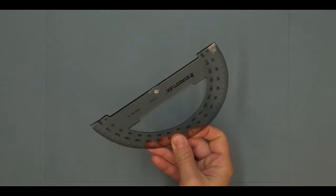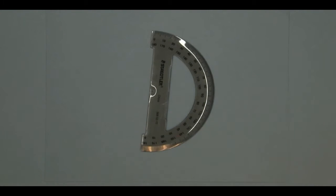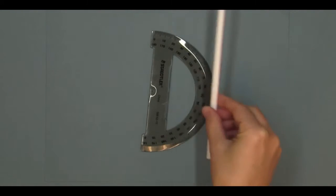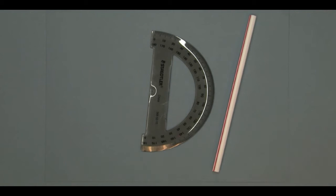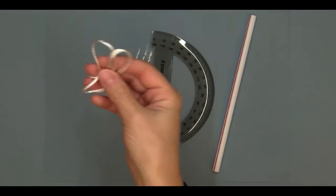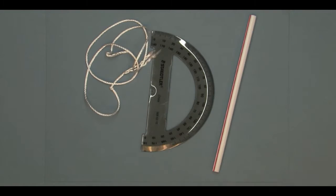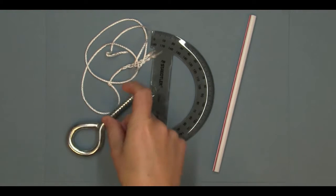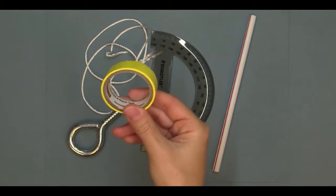We're going to show you how to make your own altitude measuring device. To do this, we're going to need a protractor, a straw, a piece of string, something heavy, and tape.